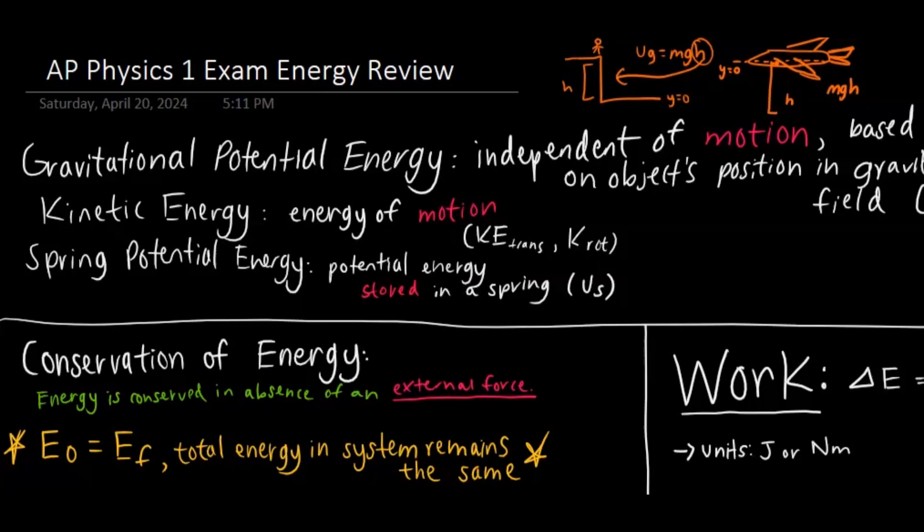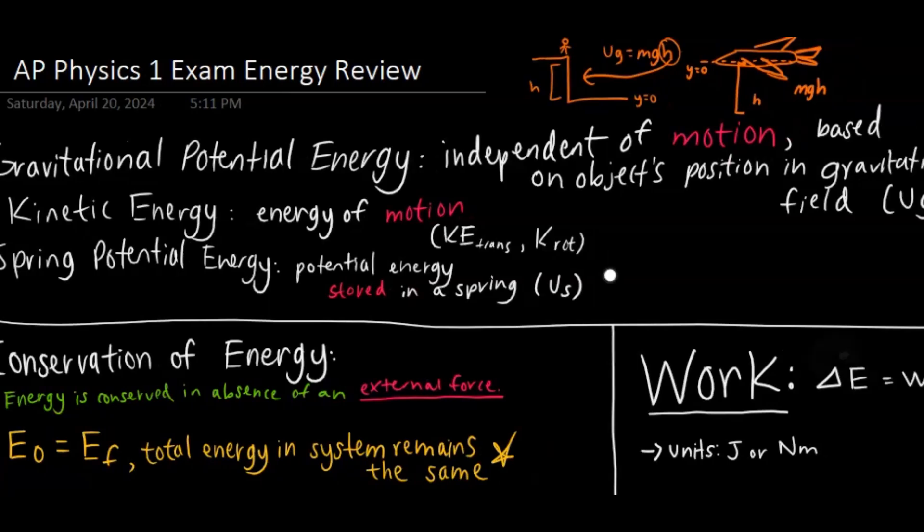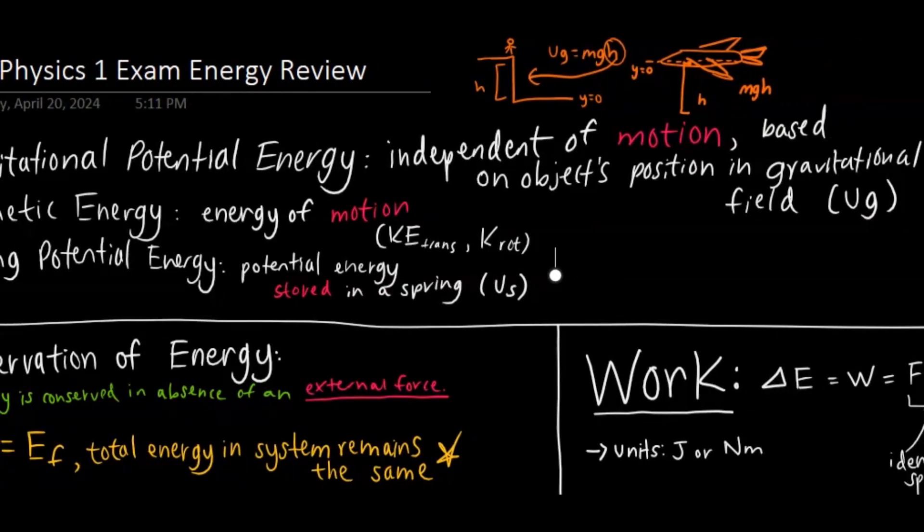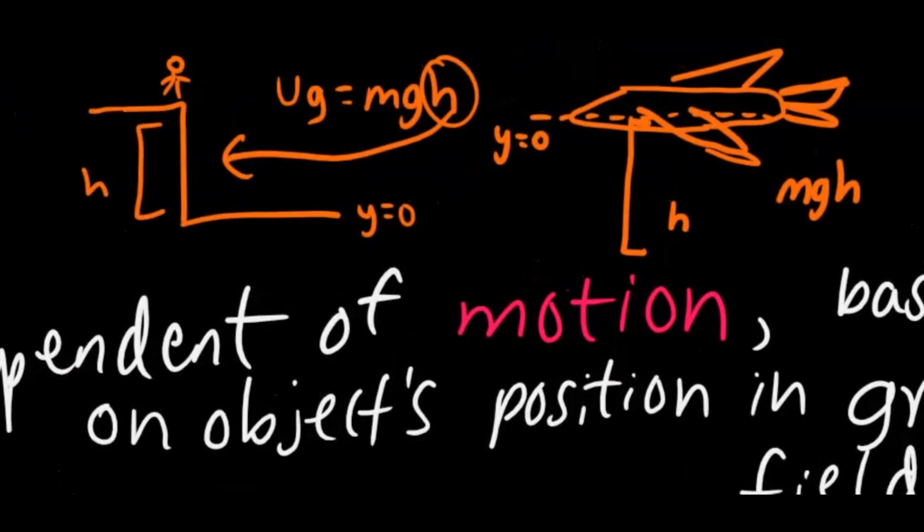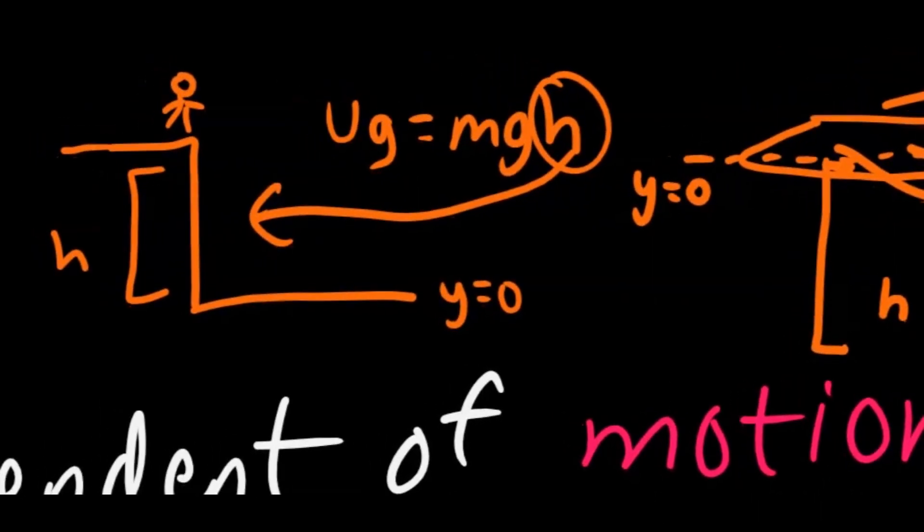So the first thing I want to touch upon is the types of energy. The first energy that we have is gravitational potential energy, which is independent of motion and based on the object's position in the gravitational field. So what exactly does that mean? Well, the important thing here is to identify what we call the horizontal zero line. So if I have this guy on a cliff and I use MGH, which is the equation for gravitational potential energy...